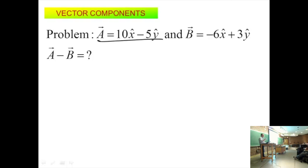What is A minus B? So here's my A, there's my B. I'm looking for A minus B. 16x minus 8y. How did you get that? So you say 16x hat minus 8y hat, right? That is correct. How did you get there?